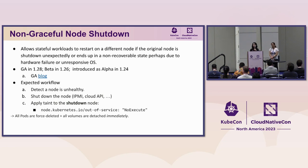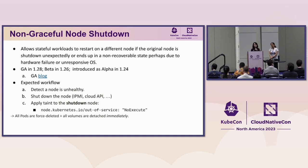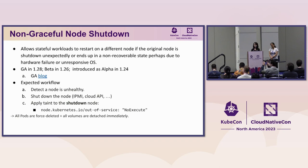When a non-graceful node shutdown happens, pods that are part of a stateful set will be stuck in terminating status and cannot get restarted on another running node. The volumes will also remain attached to the original node and cannot be detached and reattached to a new node, causing your application to not function properly. To use this feature, you need to apply the out-of-service taint on the shutdown node. After that, the pod GC controller will forcefully delete the pods, the attach-detach controller will forcefully detach the volumes, and the workloads will move to another running node successfully. This feature was introduced as alpha in 1.24, moved to beta in 1.26, and became GA in 1.28.